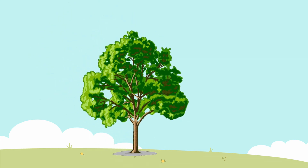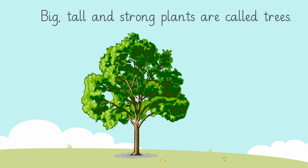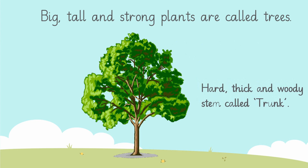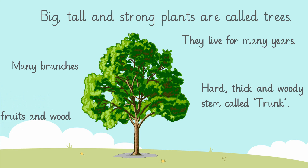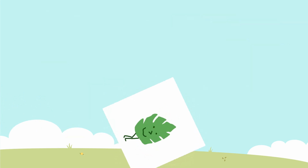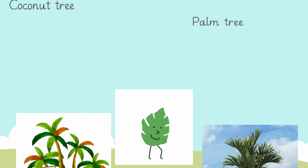Let's learn about trees. Trees are the tall plants — as they grow they become big, tall, and strong. They have a hard, thick, and woody stem which is called a trunk. They have many branches and long lives, and they live for many years. We get fruits and wood from them. Some examples of trees around us are coconut and palm trees.